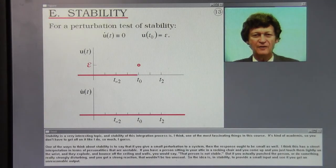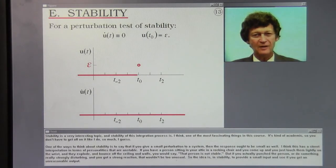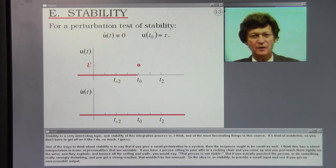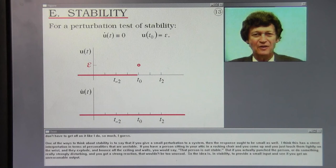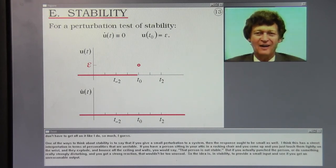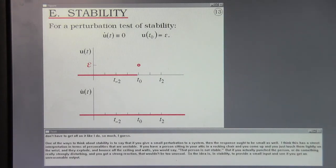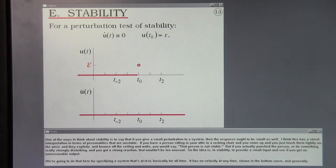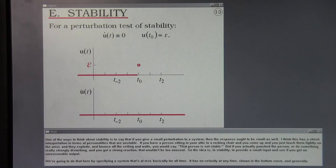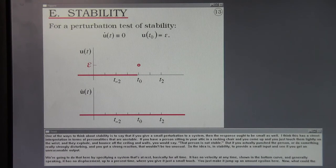Stability is a very interesting topic and stability of this integration process is one of the most fascinating things in this course. One of the ways to think about stability is to say that if you give a small perturbation to a system, then the response ought to be small as well. I think this has a street interpretation in terms of personalities that are unstable. If you have a person sitting in your attic in a rocking chair and you come up and you just touch them lightly on the wrist and they explode and bounce off the ceiling and walls, you'd say that person's not stable.